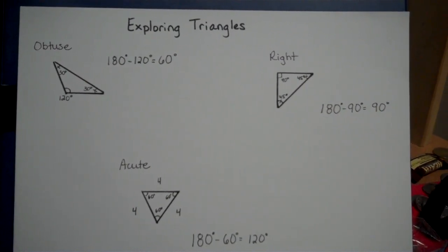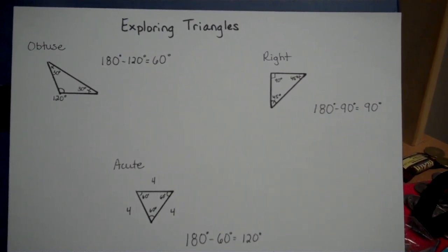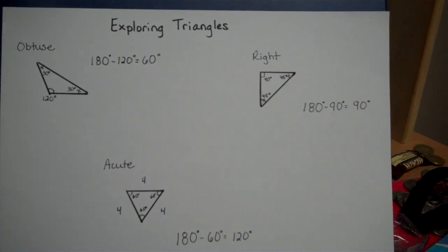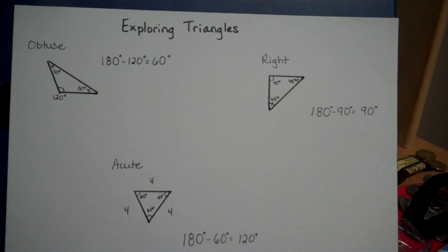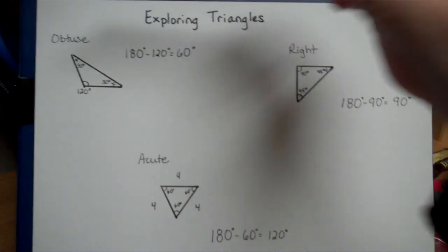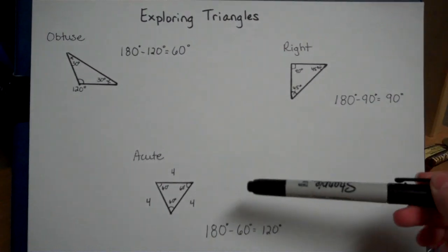Today we are going to explore triangles a little further. We have already learned that we can have three types of triangles when they are classified by their angles. These three triangles are seen here: obtuse, right, and acute.